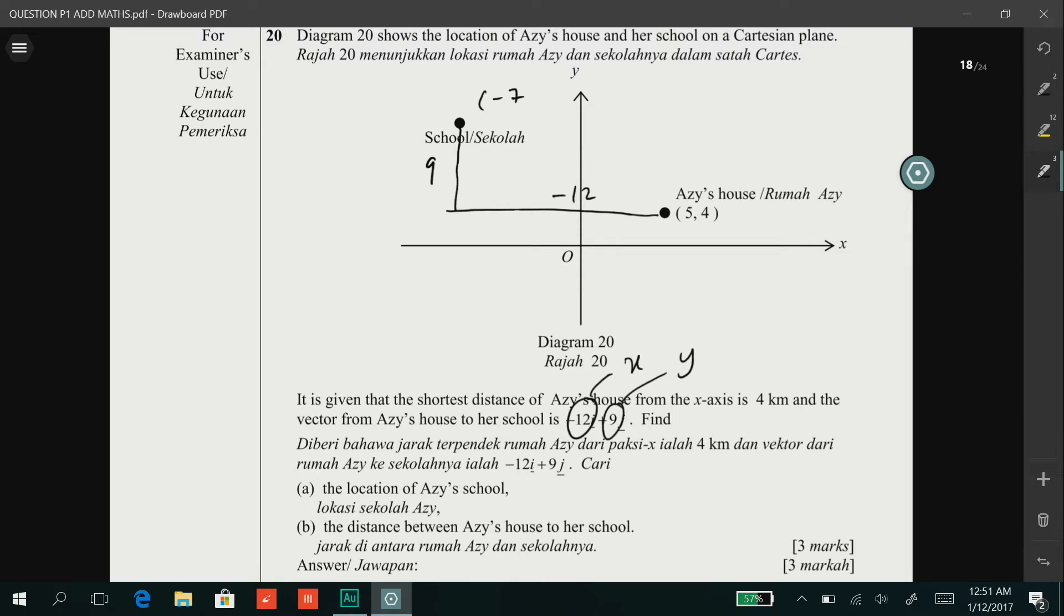And to find the y value here, we just add 4 to 9 and you should get 13. So the location of Aziz's school in the form of coordinates is (-7, 13).